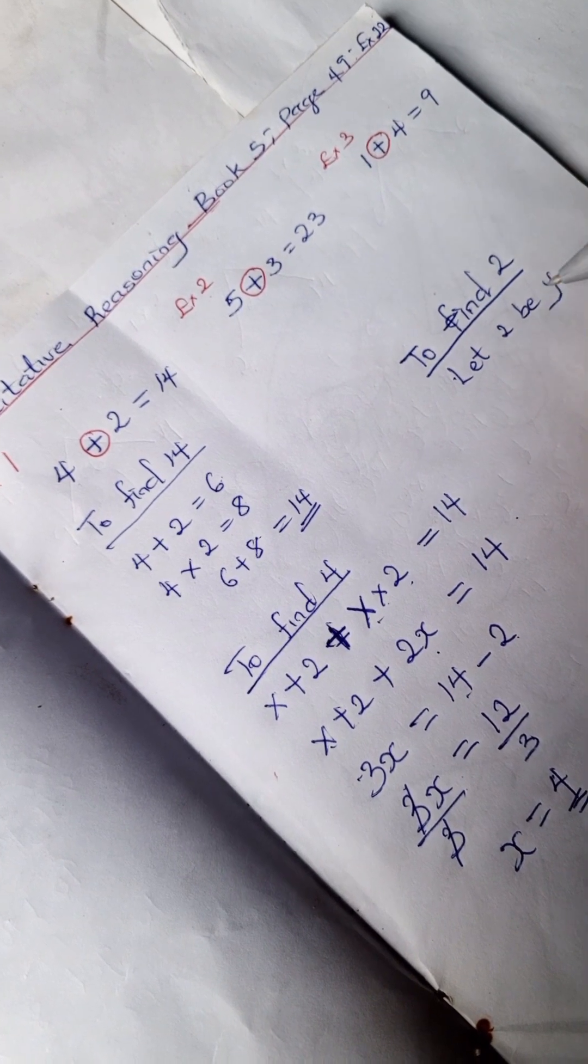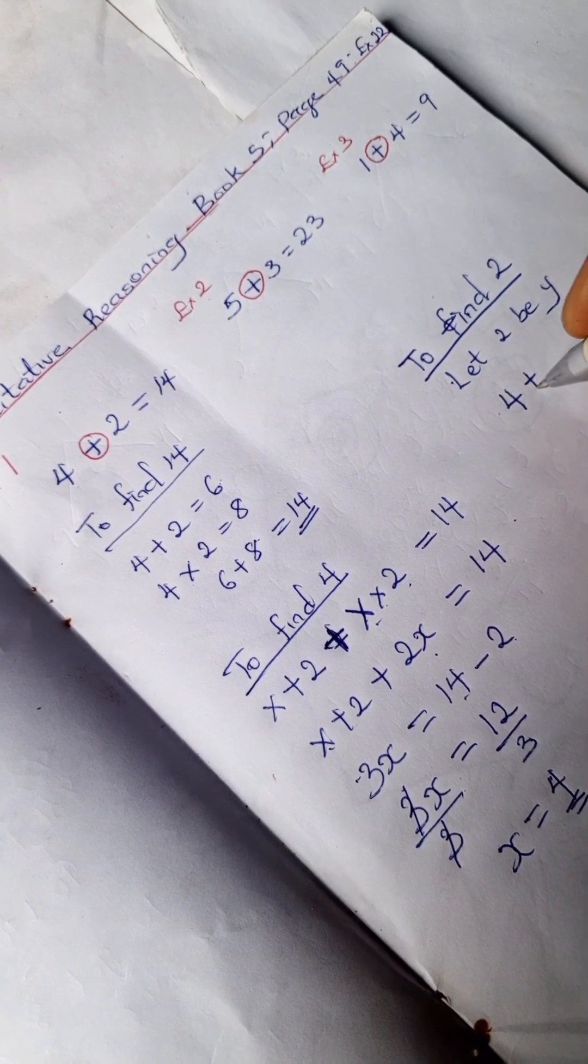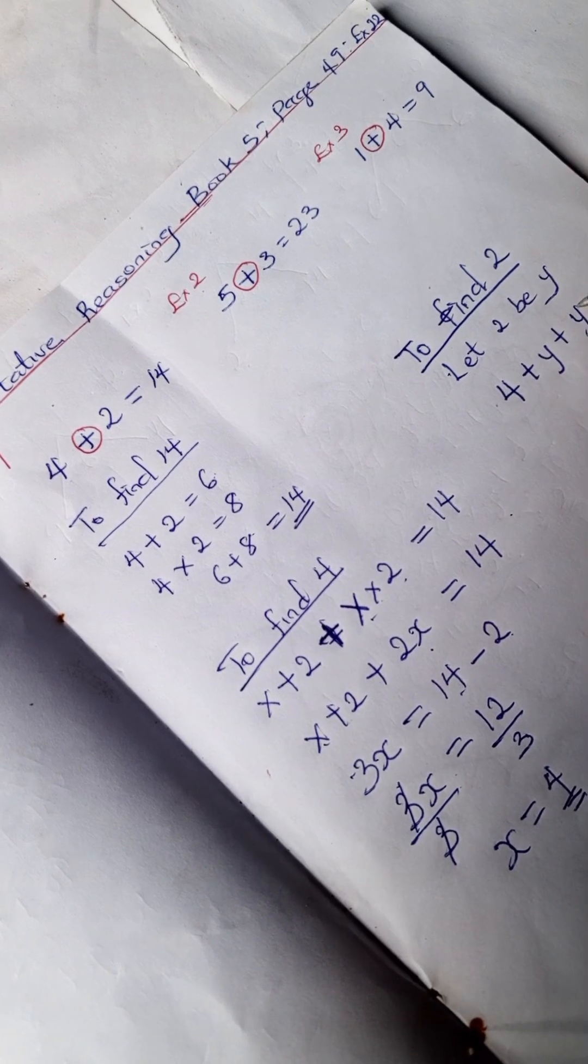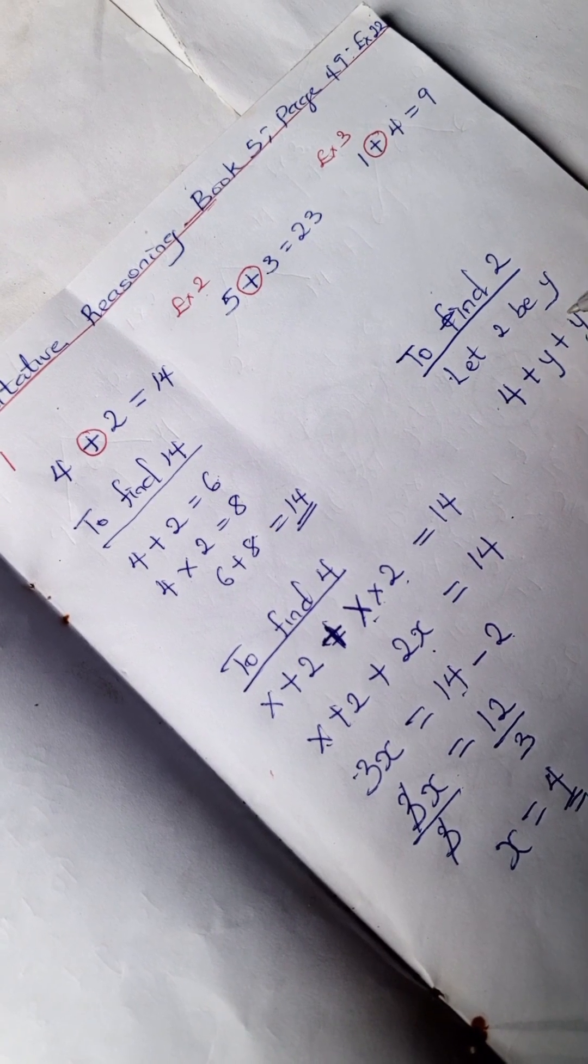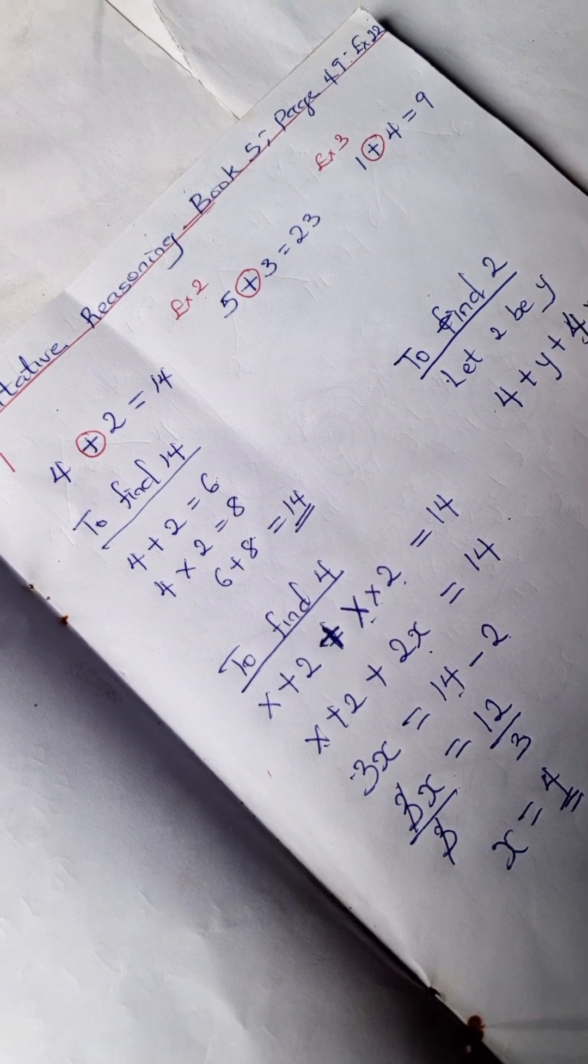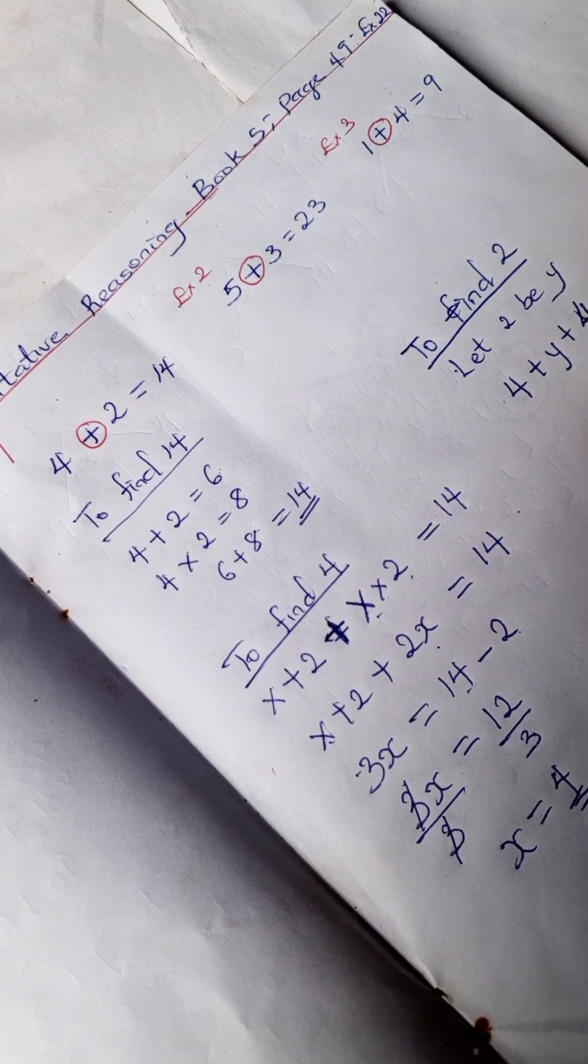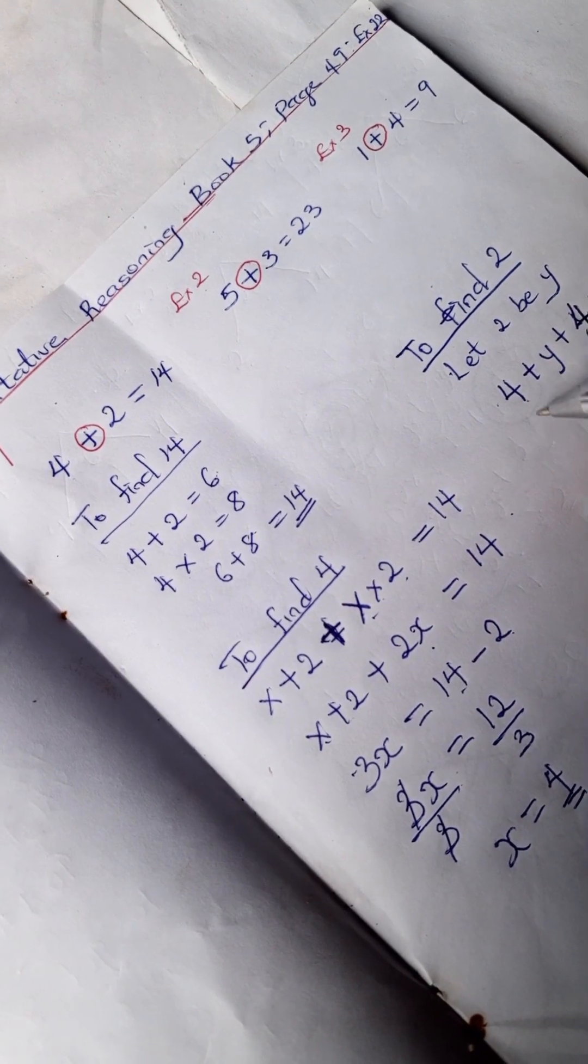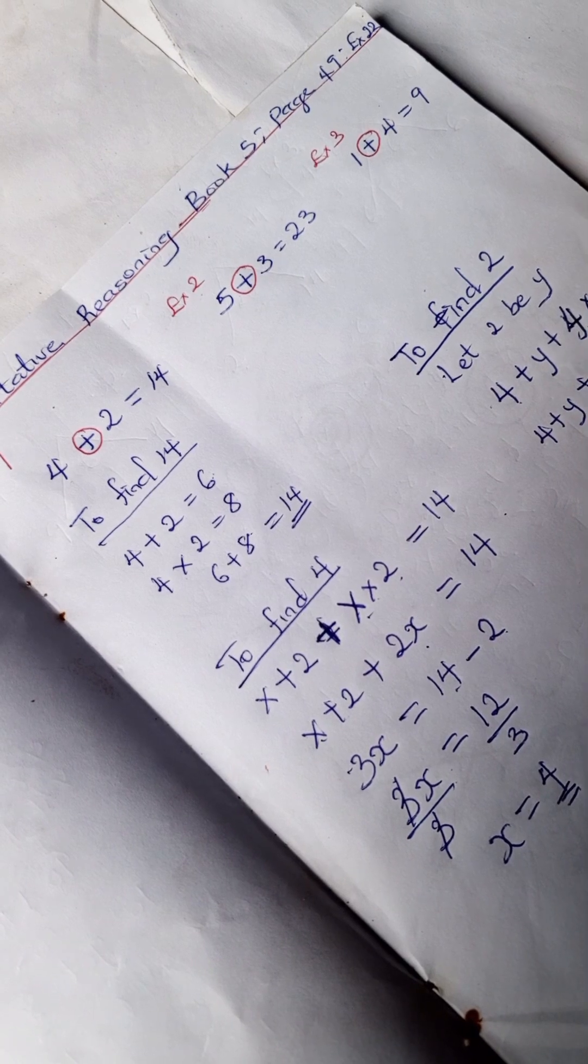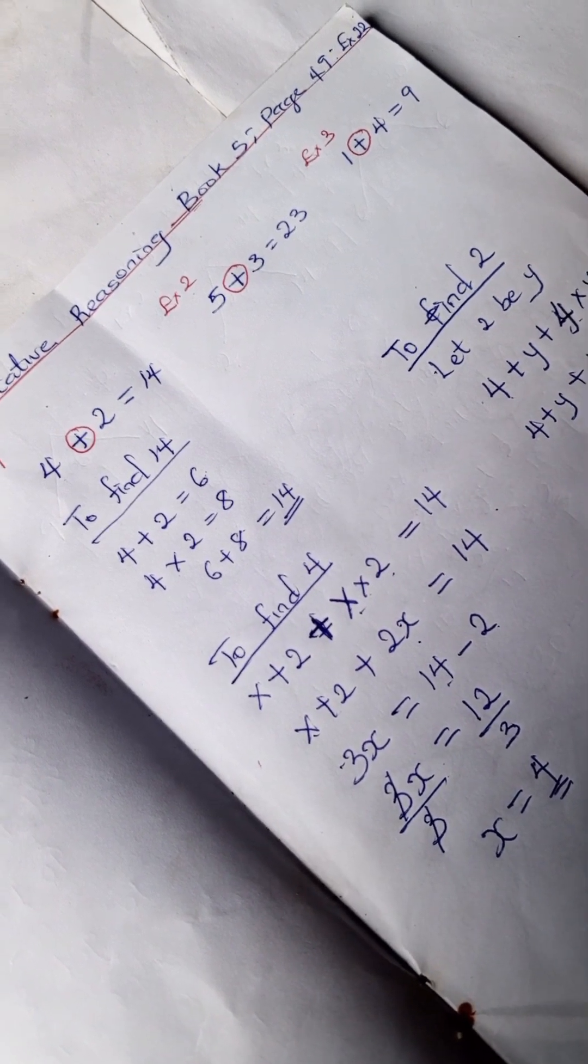So we have 4 plus y plus 4 times y. Sorry, this was a mistake. So we have 4 plus y plus 4y equals 14. We're going to collect like terms again here.